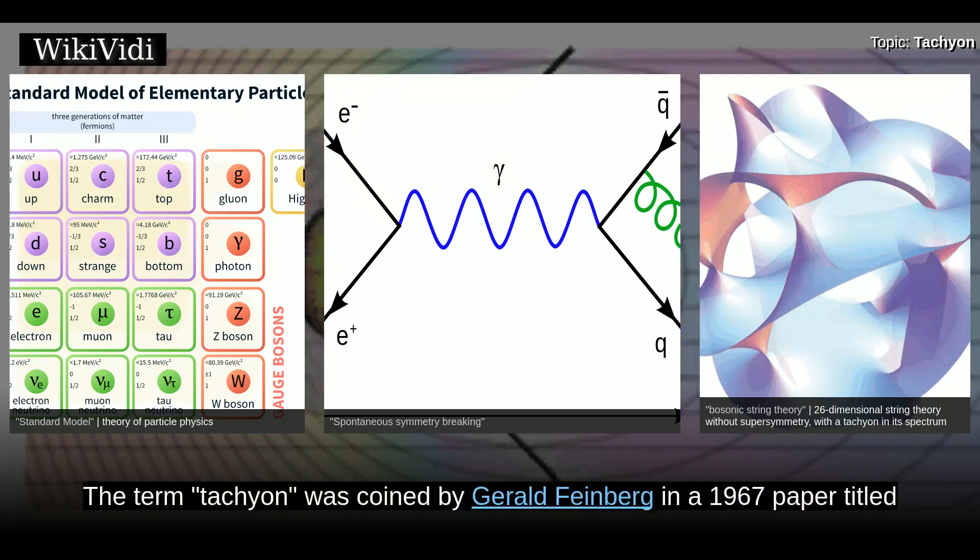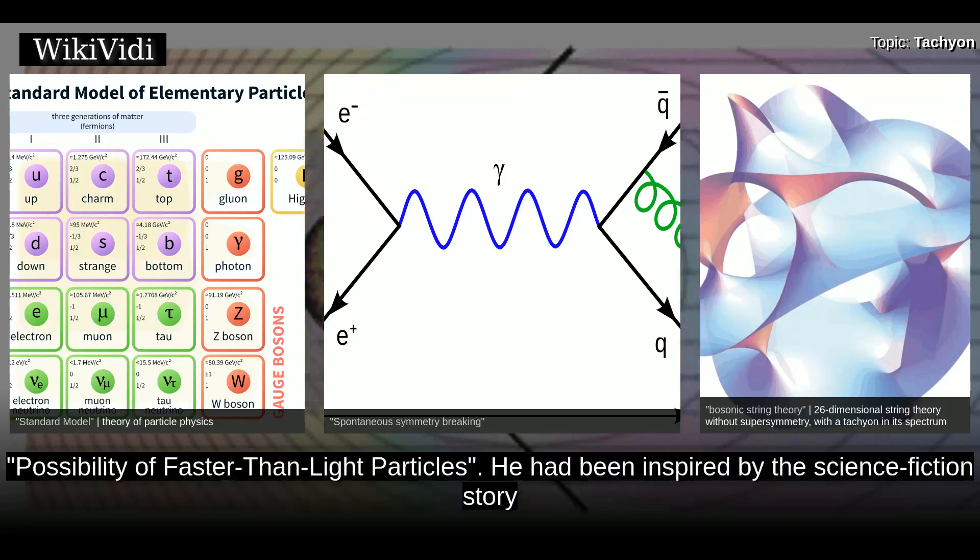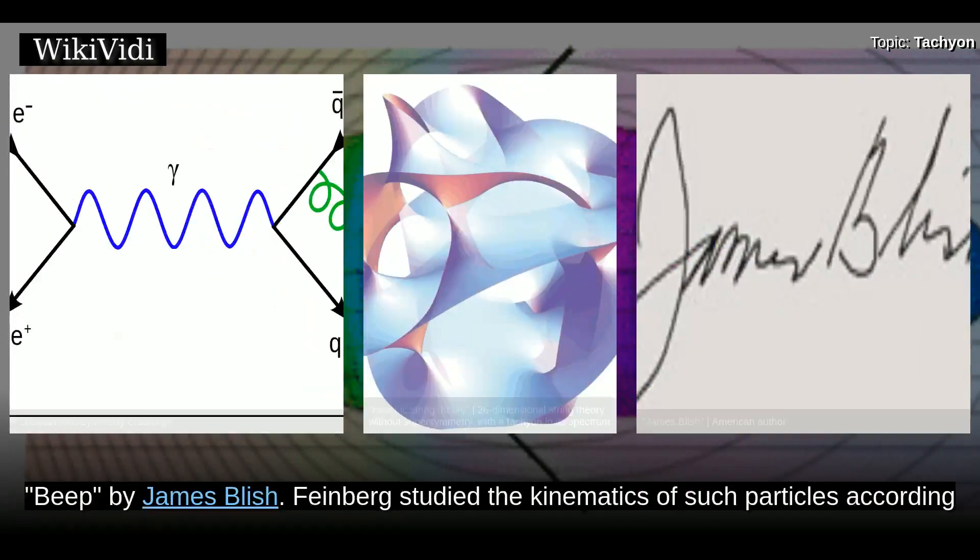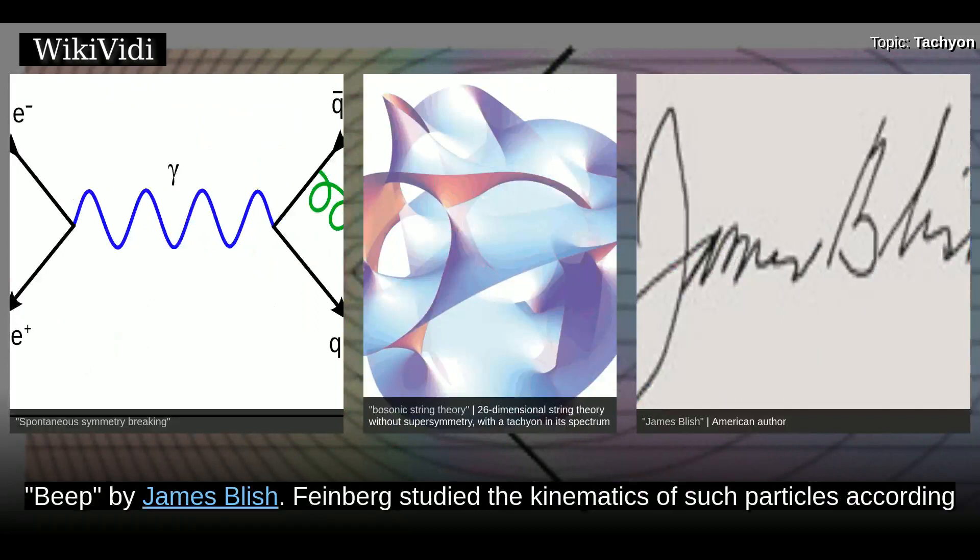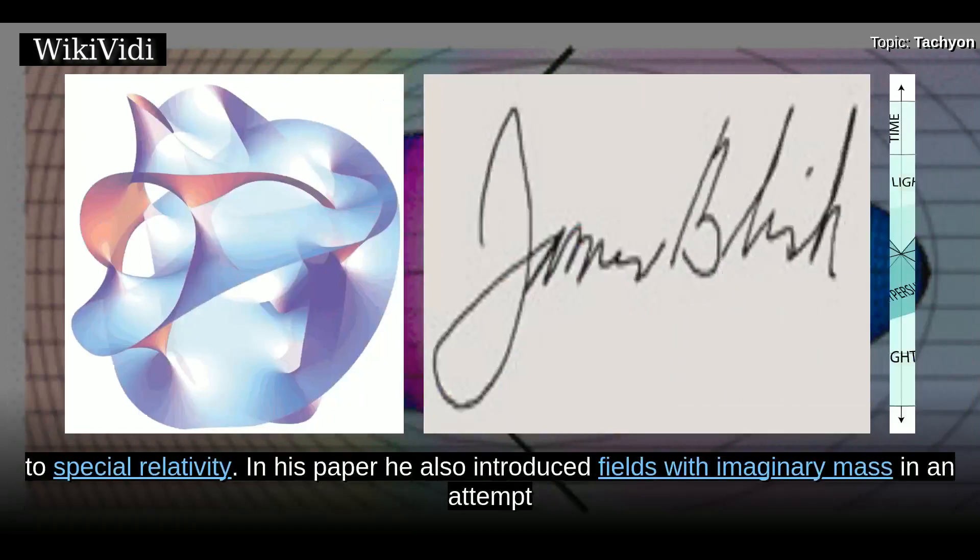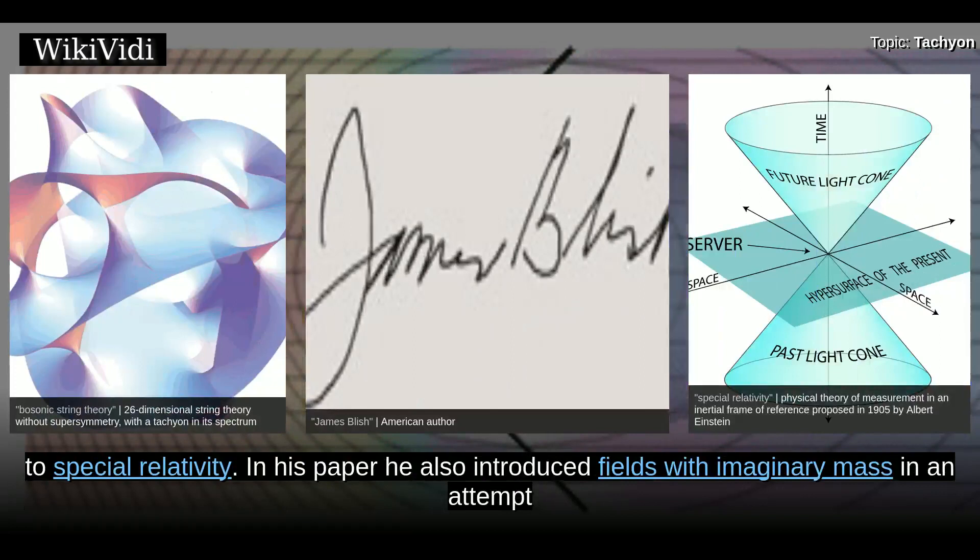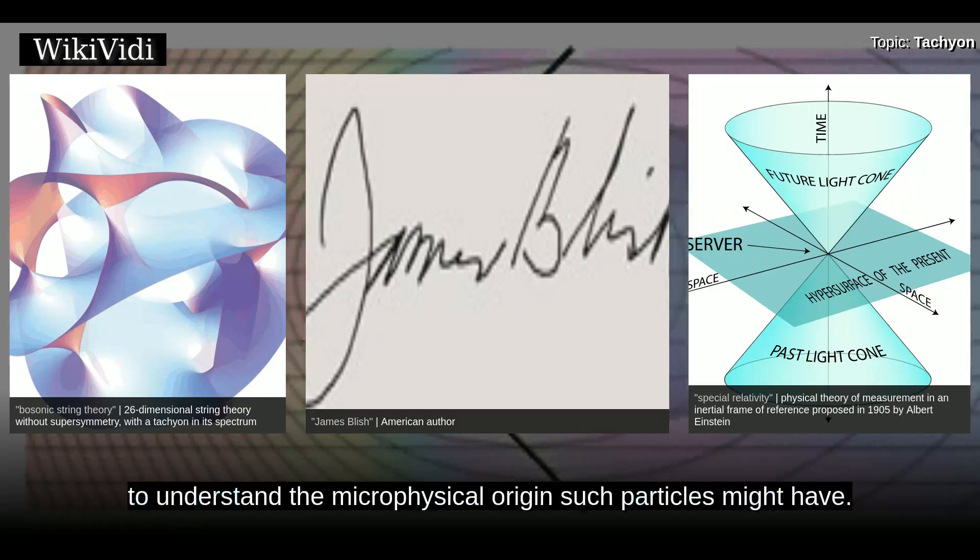The term tachyon was coined by Gerald Feinberg in a 1967 paper titled 'Possibility of Faster-Than-Light Particles.' He had been inspired by the science fiction story 'Beep' by James Blish. Feinberg studied the kinematics of such particles according to special relativity. In his paper, he also introduced fields with imaginary mass in an attempt to understand the microphysical origin such particles might have.